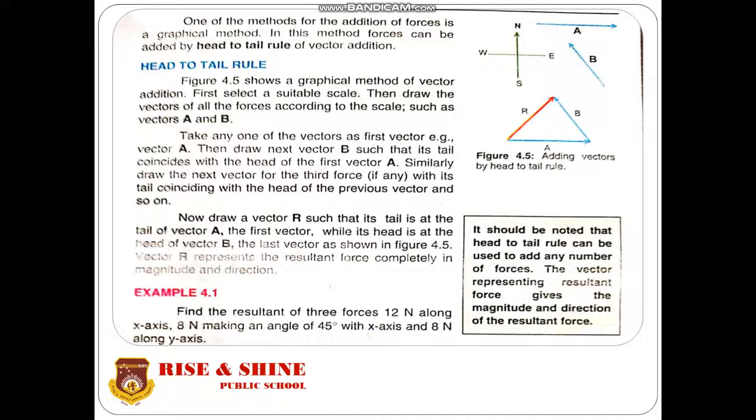Figure 4.5 shows a graphical method of vector addition. First, select a suitable scale, then draw vectors A and B according to that scale. Take vector A as the first vector, then draw vector B so its tail coincides with the head of A. For additional forces, each subsequent vector's tail coincides with the head of the previous one. Draw resultant vector R with its tail at the tail of vector A and its head at the head of vector B, the last vector. R represents the resultant force in both magnitude and direction.